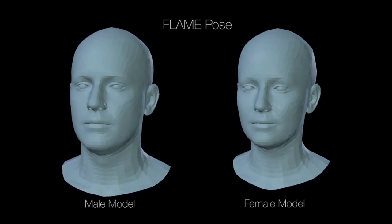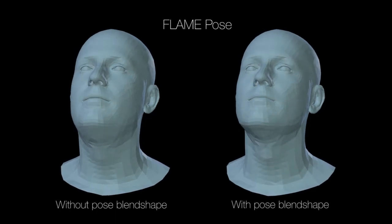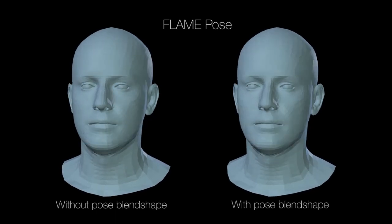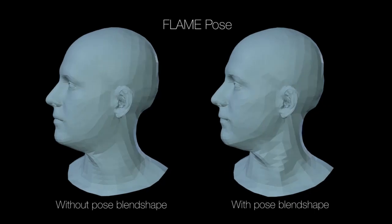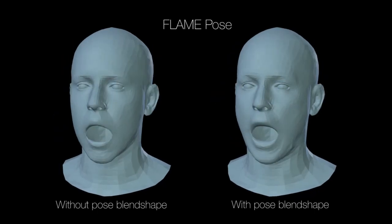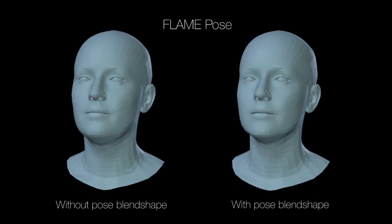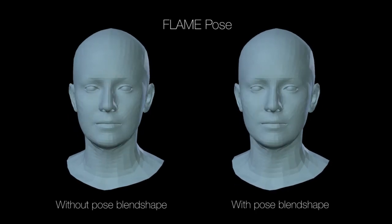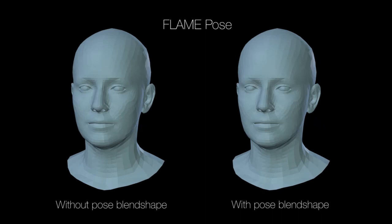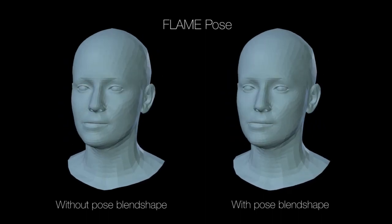A key contribution of FLAME is that we learn a linear blend skinned model for jaw and neck motions from the aligned training data. This involves learning linear blend weights, joint positions for the neck and jaw, and pose-dependent corrective blend shapes. With pose-dependent blend shapes, subtle details in the neck and mouth regions are well captured, making the model visually realistic. These blend shapes can then be automatically applied during animation or model fitting.